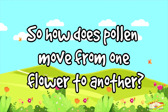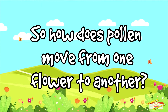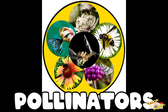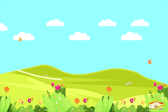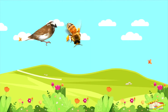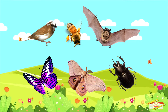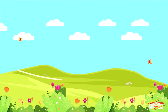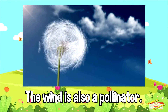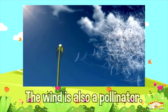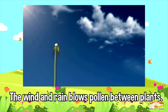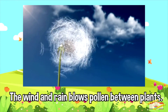So how does pollen move from one flower to another? By pollinators! Examples of pollinators are birds, bees, bats, butterflies, moths, beetles, or other animals. Even the wind itself is a pollinator — the wind and rain blow pollen between plants, which causes pollen to transfer.